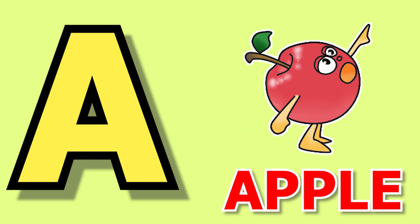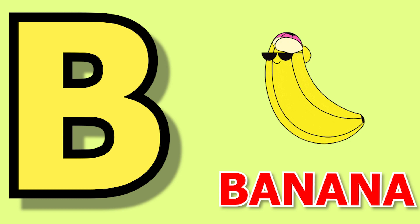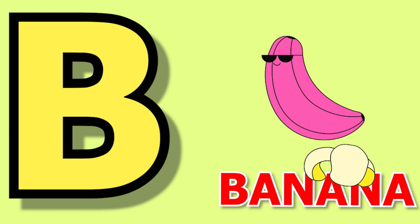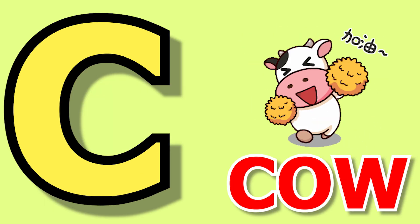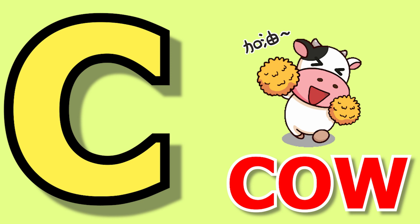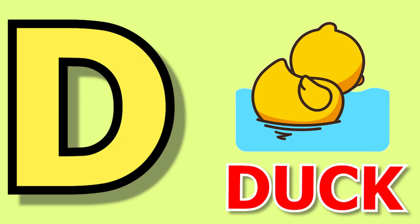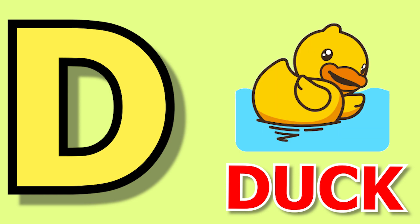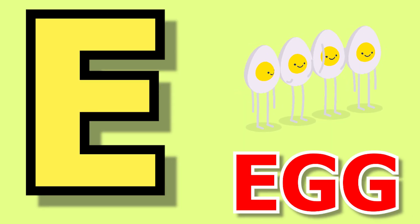A for apple, apple means sheep. B for banana, banana means kela. C for cow, cow means gay. D for duck, duck means buttock. E for egg, egg means under.